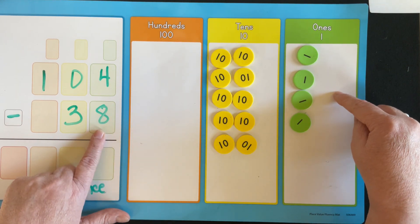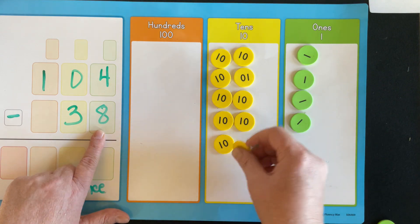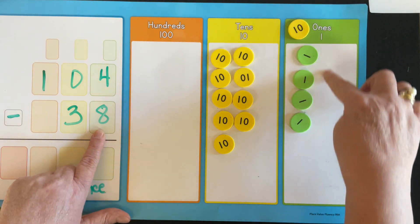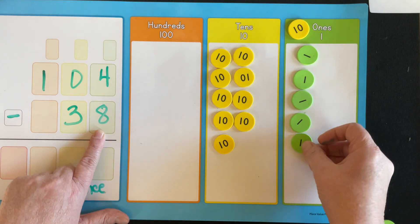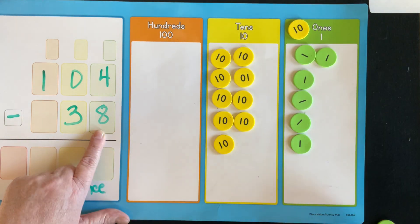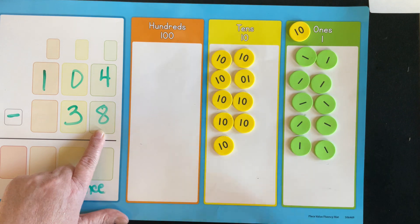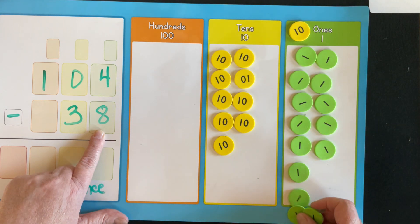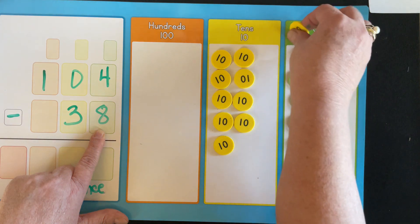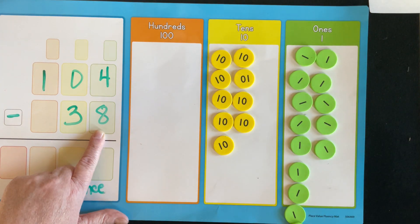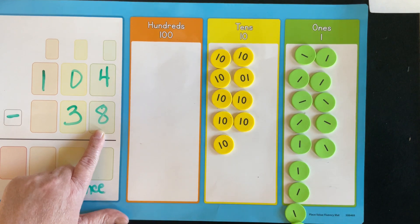Now do I have eight ones? No. So I can move a 10 and then I get to trade it for one, two, three, four, five, six, seven, eight, nine, 10. So now I traded that for 10 ones, which is the green.